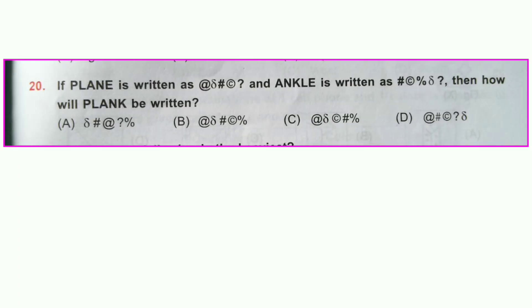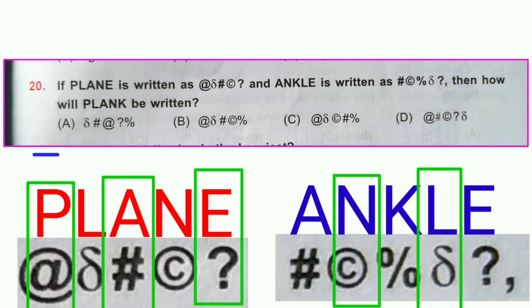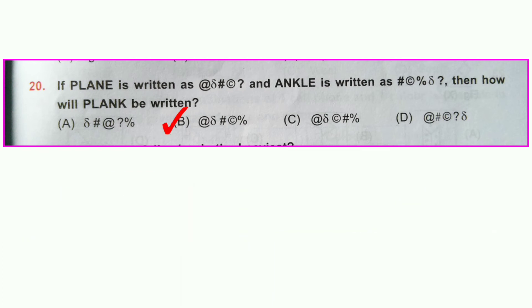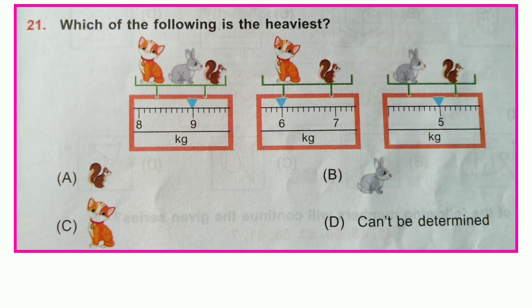Question number twenty: If 'plane' is written using certain symbols and 'uncle' is written using other symbols, then how will 'plank' be written? Picking the letters and their corresponding symbols — there are six letters total with their symbols — those symbols are used for 'plank'. Option B is correct.